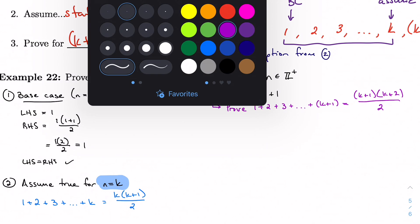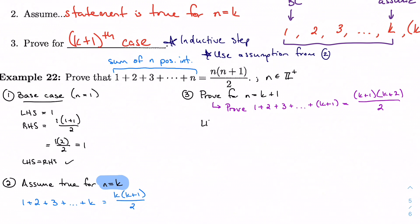So let's do it. Start with the left-hand side. We're just going to work with the left-hand side alone, try to transform it into the right-hand side. So 1 plus 2 plus 3 plus all the way to k plus 1. I want to try to fit my assumption in somewhere, and it's not immediately obvious.